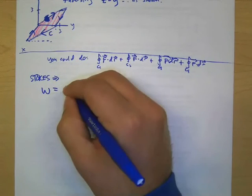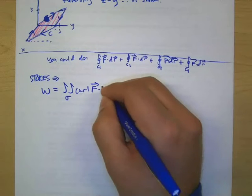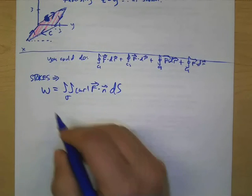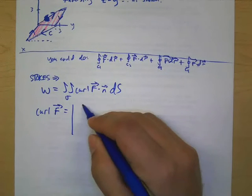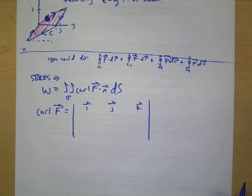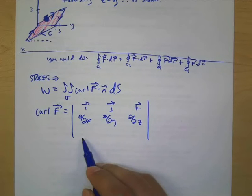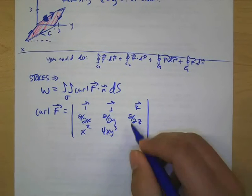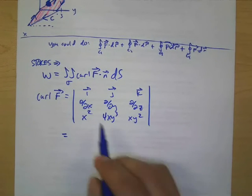Okay, so that'd be one way to do it. But now Stokes' theorem says that to find the work, all we have to do is calculate the surface integral of the curl of F dot N dS. Okay, so first, let's find the curl.